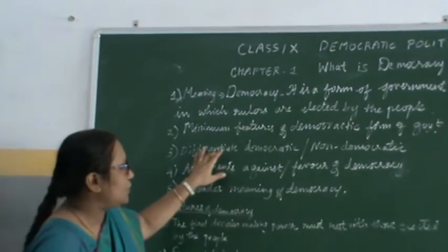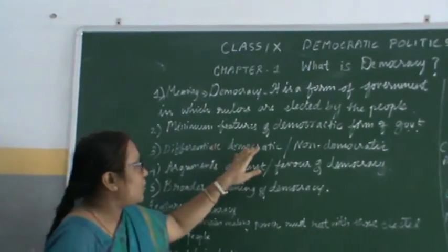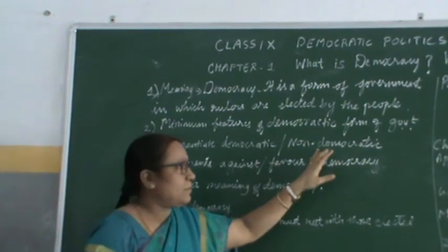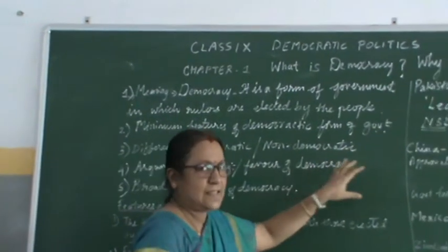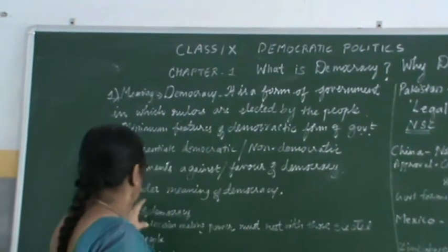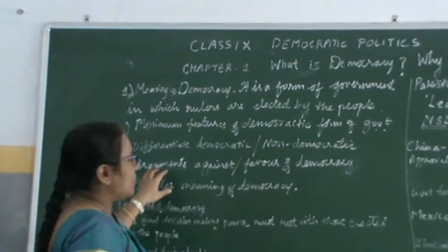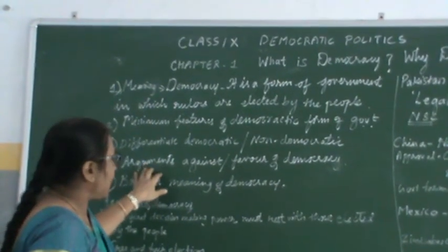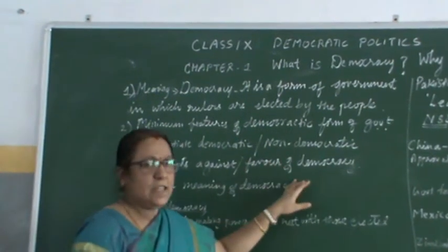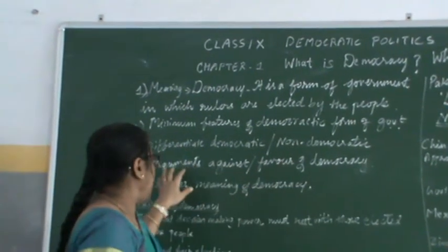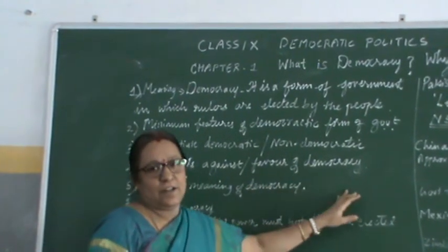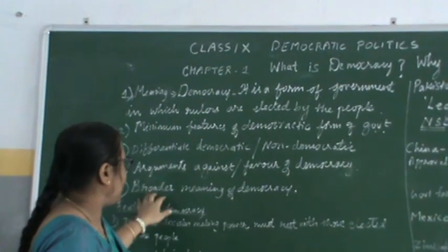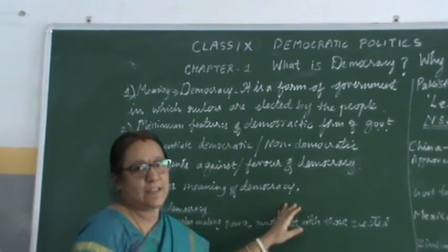We also learnt to differentiate democratic and non-democratic forms of government by taking up these examples. And we also learnt what are the arguments against democracy, what are the arguments in favour of democracy, and we arrive at the broader meaning of democracy.